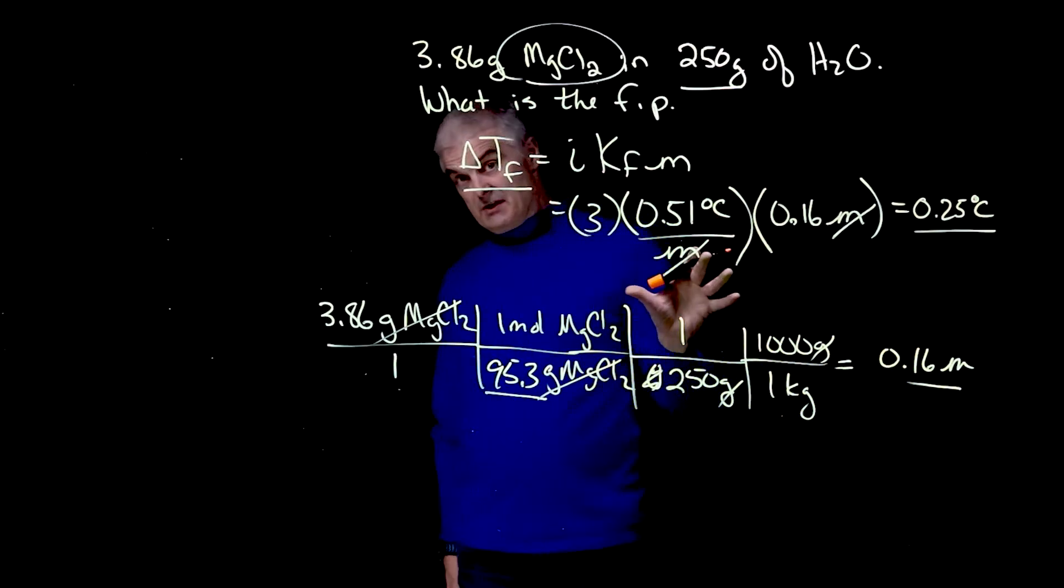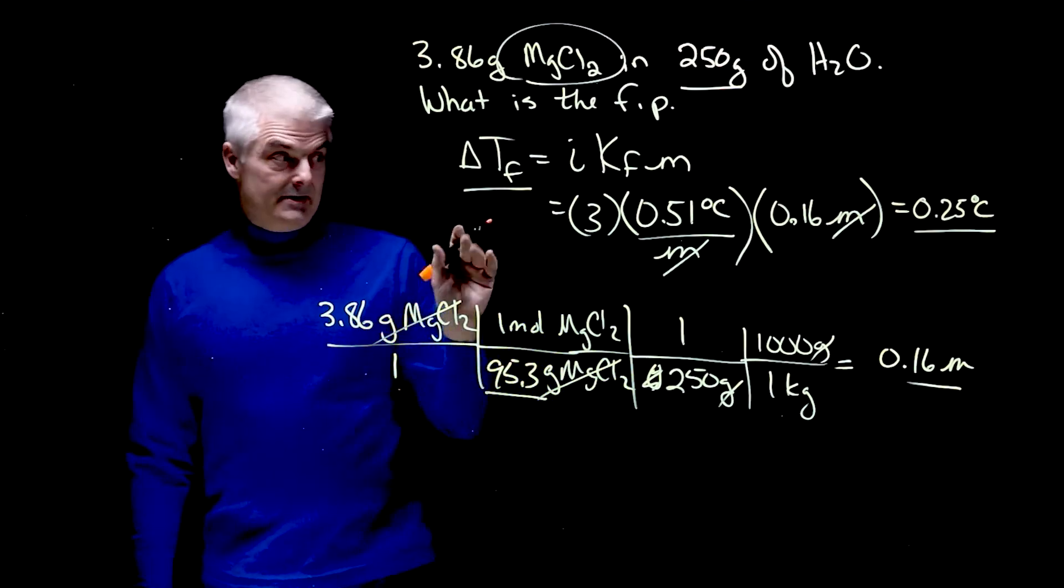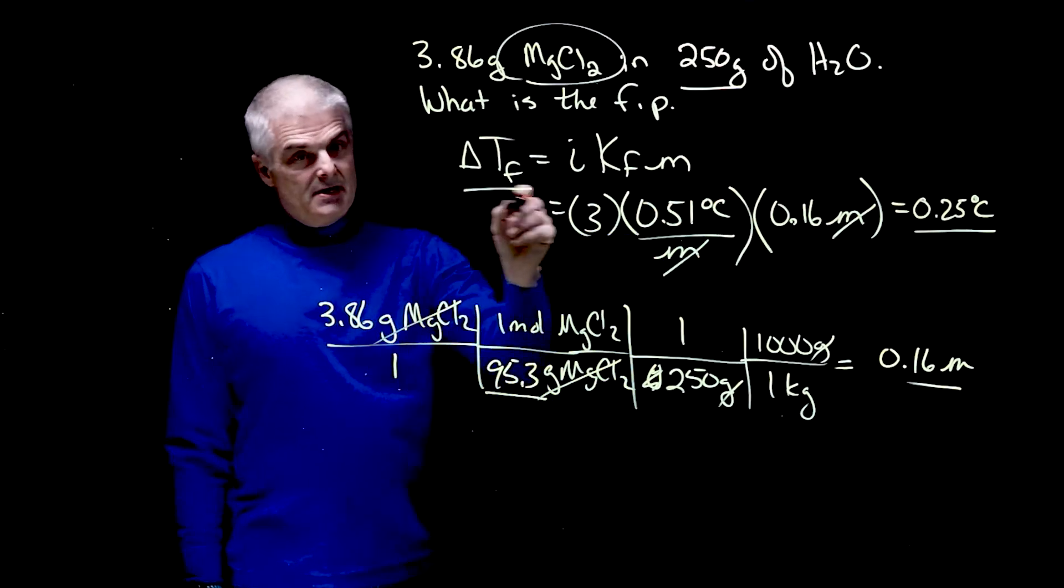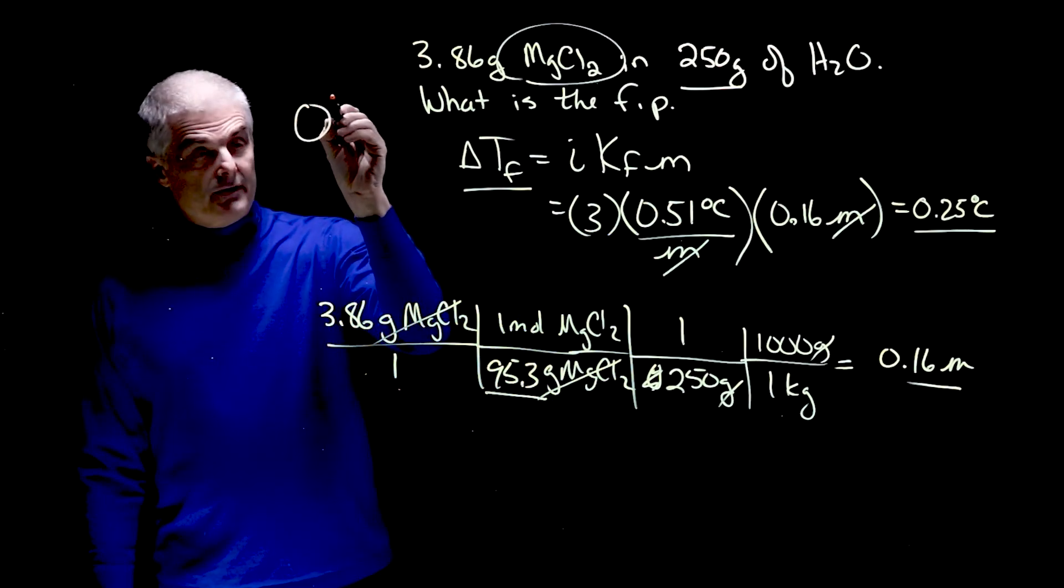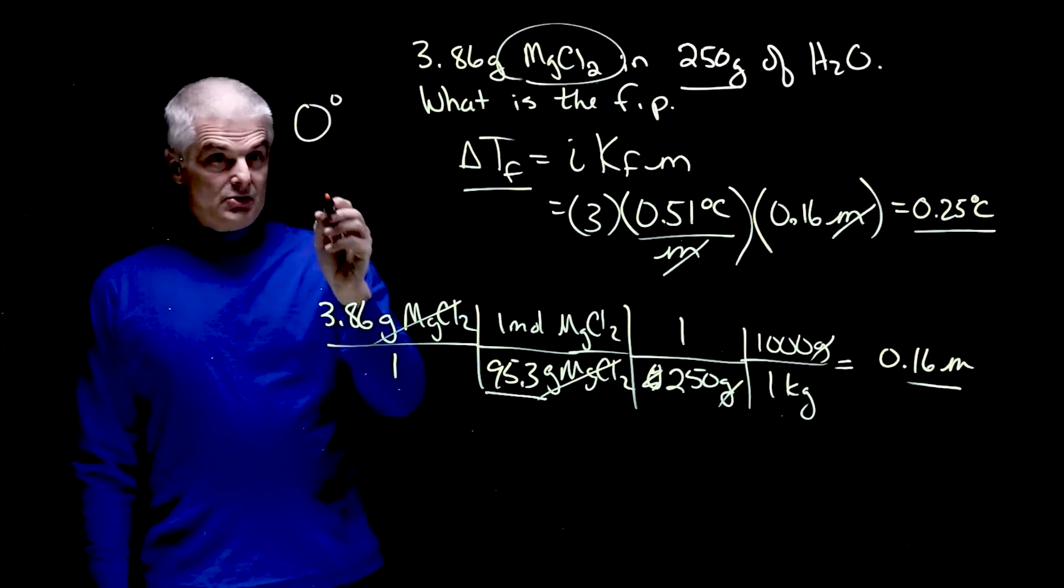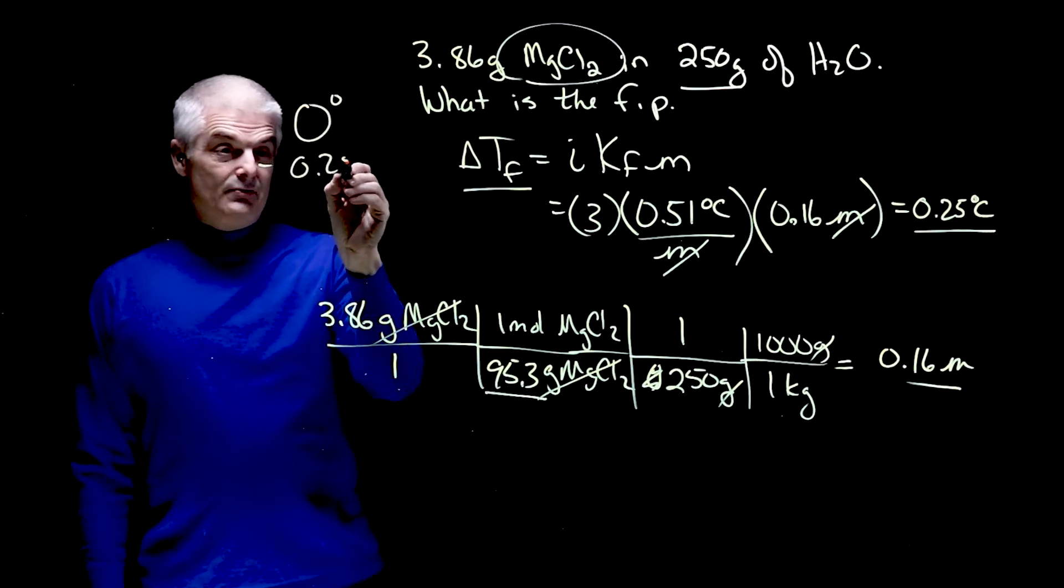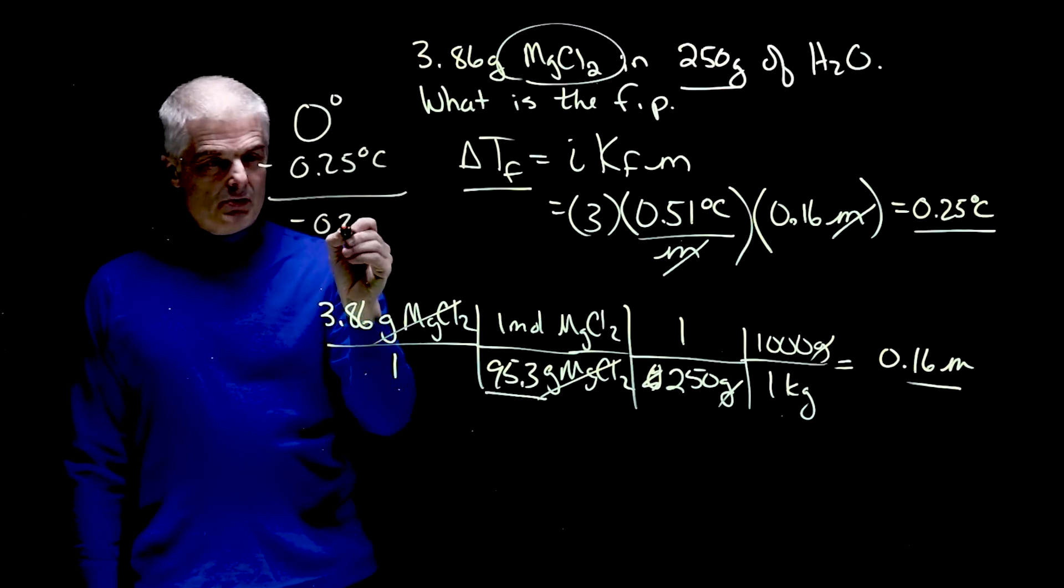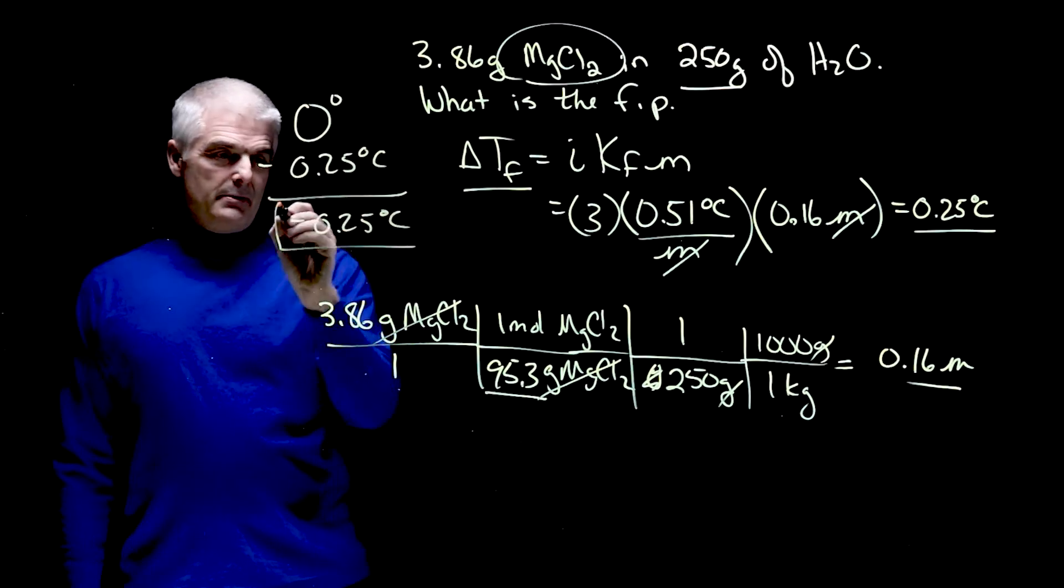So what's the freezing point? That's a tricky question. It's not 0.25 Celsius because the freezing point of water is 0 degrees. So I'm going to subtract 0.25 degrees Celsius. So it's negative 0.25 degrees Celsius.